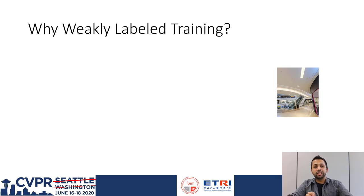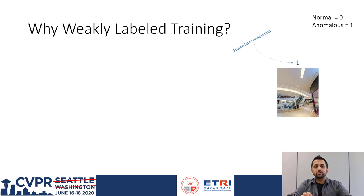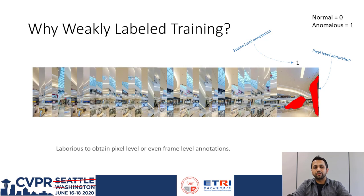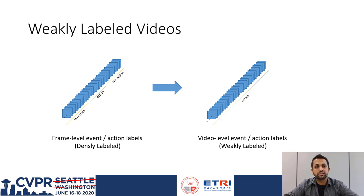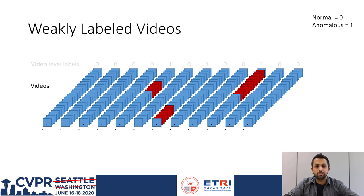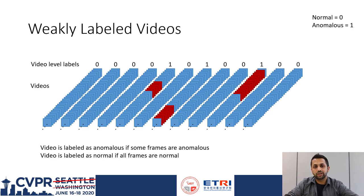One might wonder: why do we need weakly-labeled training? To put things in perspective, let's take an example image extracted from a video. If we need to obtain frame-level annotation, we can simply label a particular frame as normal or anomalous. To locate anomalies, we may also need pixel-level annotations. However, we have to repeat this process for hundreds of thousands of frames belonging to the videos of our dataset, which is indeed a costly process. Therefore, a widely popular paradigm is to utilize weakly-labeled videos. A video is considered normal if all frames are normal, and it is considered anomalous if some of the frames are anomalous.